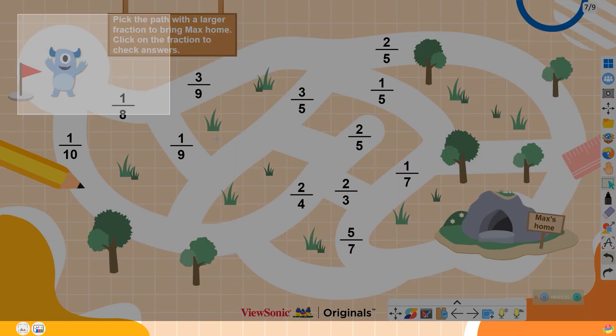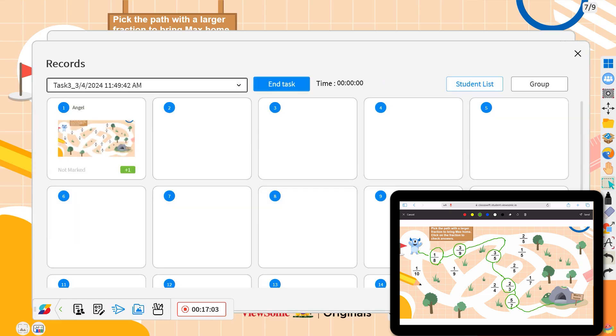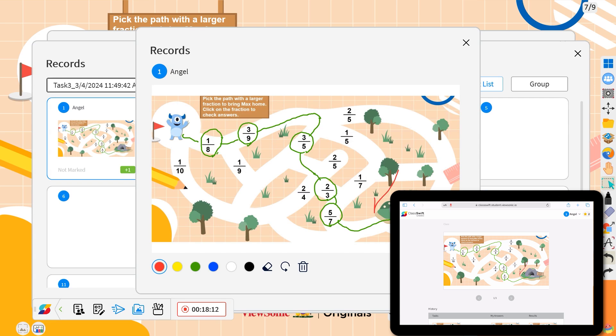Pick the path with a larger fraction to bring Max home. Click on the fraction to check answers.